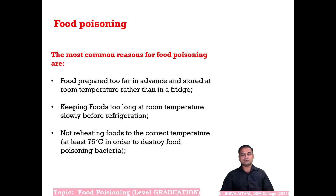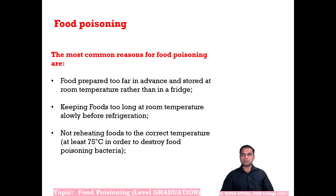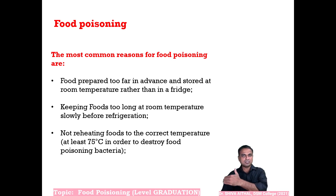Common reasons for food poisoning include too much time lag between production and consumption — food prepared far in advance and stored at room temperature rather than in a fridge. In summer, the environment is very conducive for microorganism growth, and the physical and chemical quality of food can deteriorate. Keeping foods too long at room temperature before refrigeration or immediate heating may also cause food poisoning.